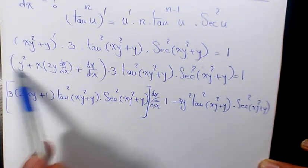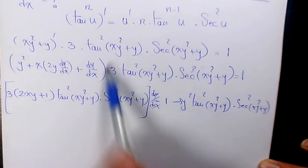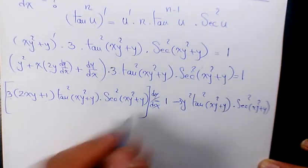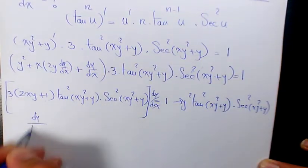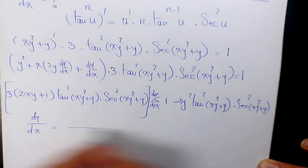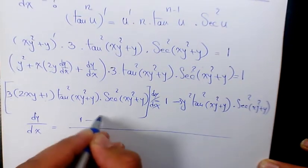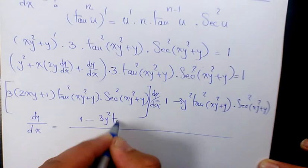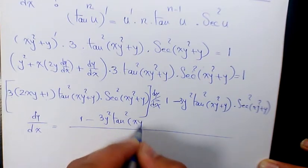So then, you can say dy/dx will be equal to 1 minus 3y² tan² of (xy² + y) times secant² of (xy² + y)